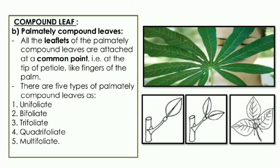In palmately compound leaves, all the leaflets are attached at a common point — at the tip of the petiole, like fingers of the palm. There are five types: unifoliate (one leaflet), bifoliate (two leaflets), trifoliate (three leaflets), quadrifoliate (four leaflets), and multifoliate, where many leaflets are attached at the tip.